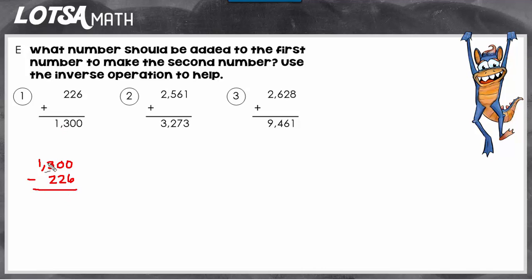I'm going to solve this problem now. So the number that should be added to 226 to get 1,300 is 1,074.